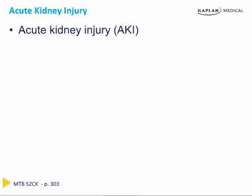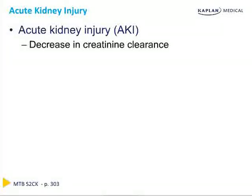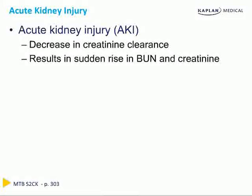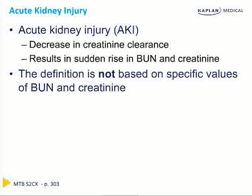Acute kidney injury was previously known as acute renal failure, or ARF, so don't be confused if you see it described this way in some textbooks. Older textbooks may define AKI as a 50% rise in creatinine above baseline or an absolute rise of 0.5 in creatinine. However, on the USMLE Step 2, the most current definition of AKI is not based on any one specific number. Rather, AKI is defined as a decrease in creatinine clearance that results in a sudden rise in BUN and creatinine.